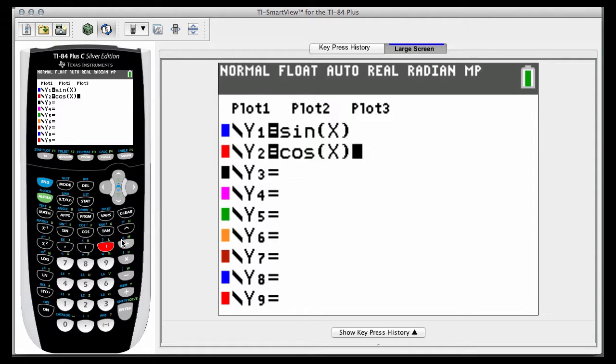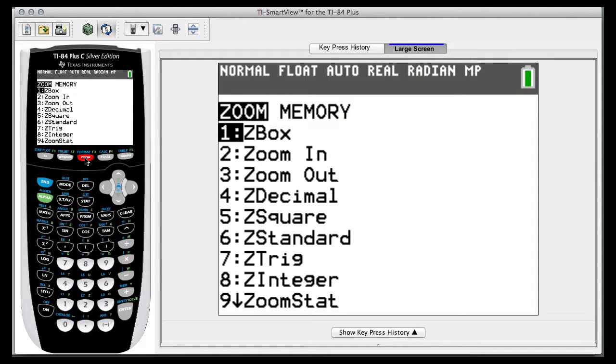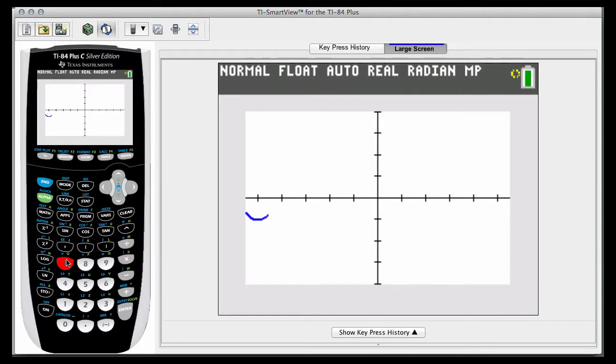Make sure you're in radian mode when you go to do your graph. It would be best to graph it with zoom seven, zoom trig. So the first one you're seeing here is the sine curve and the red one coming up is your cosine curve.